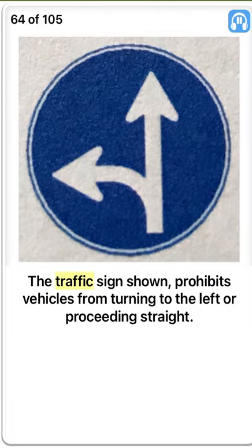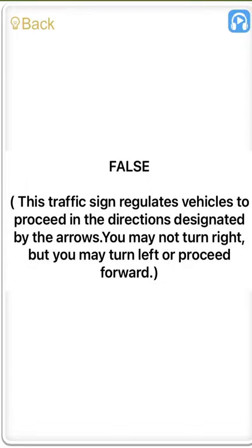The traffic sign shown prohibits vehicles from turning to the left or proceeding straight. False. This traffic sign regulates vehicles to proceed in the directions designated by the arrows — you may not turn right, but you may turn left or proceed forward.